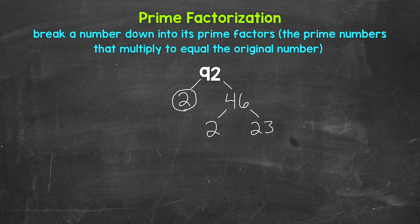Now both 2 and 23 are prime numbers. So we are done here and here. We can't break those down any further.